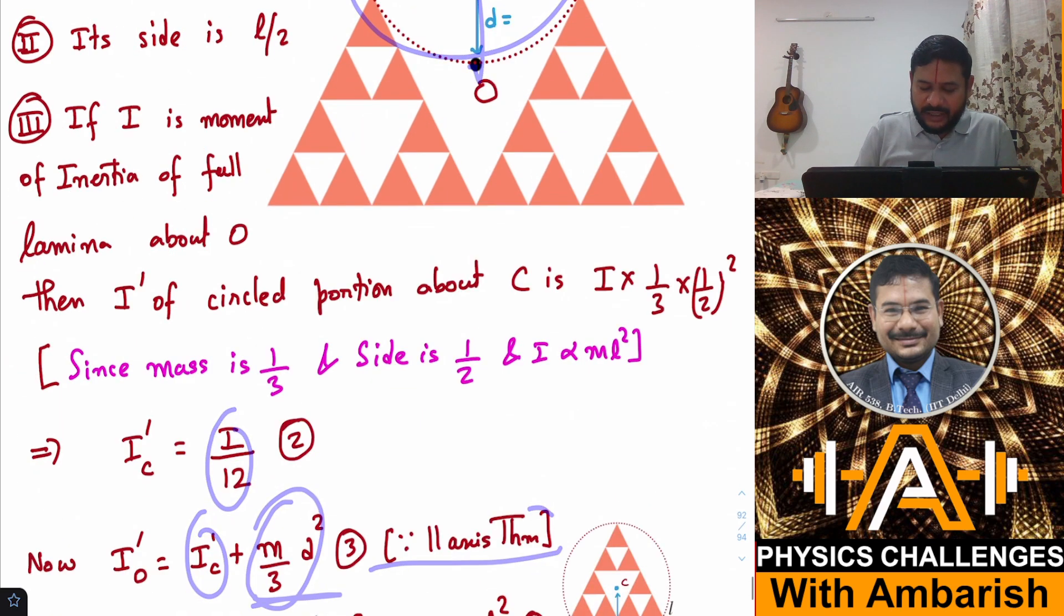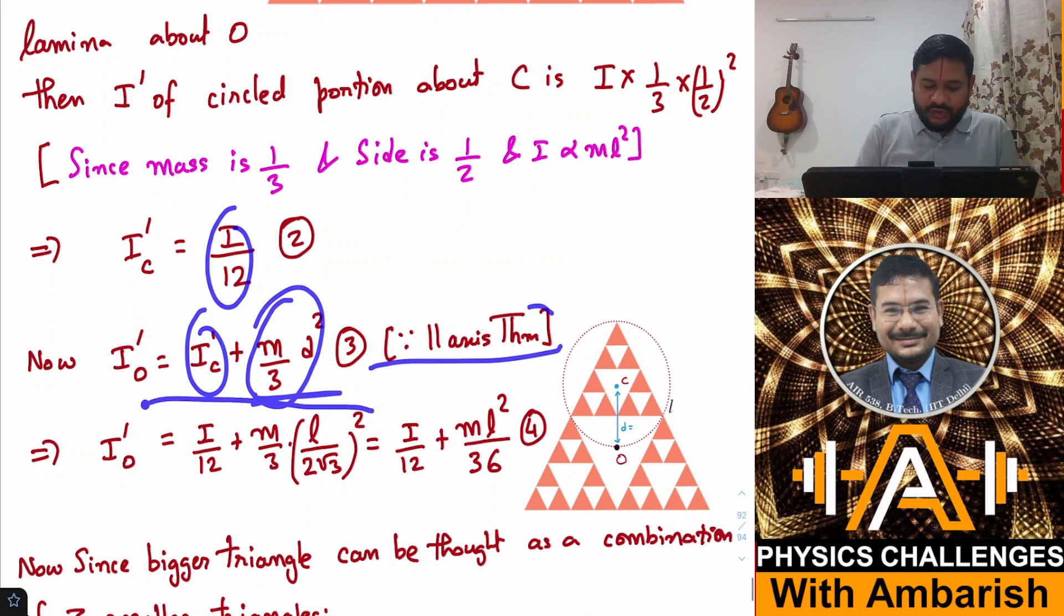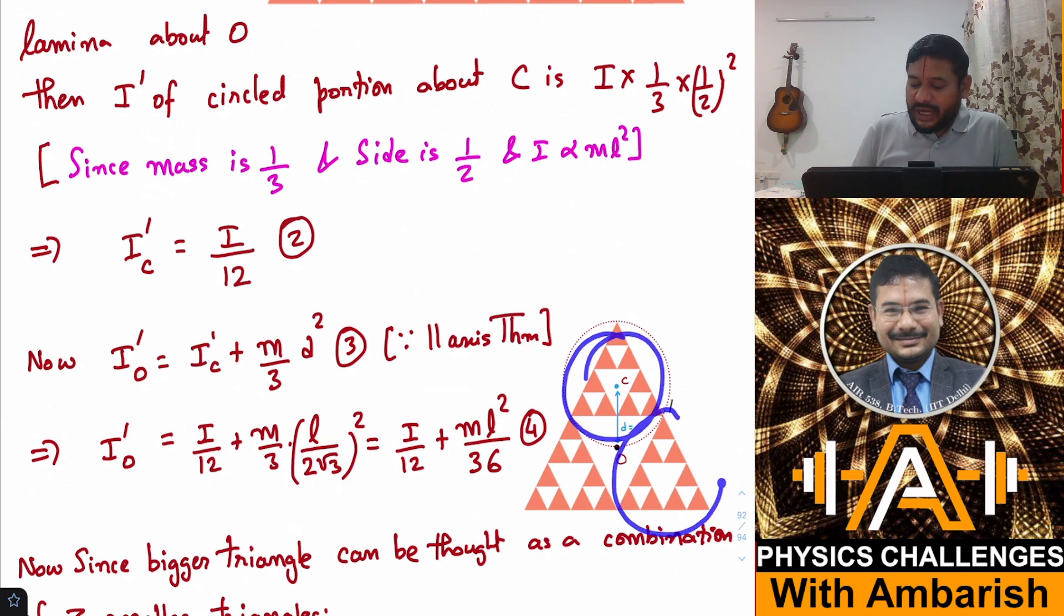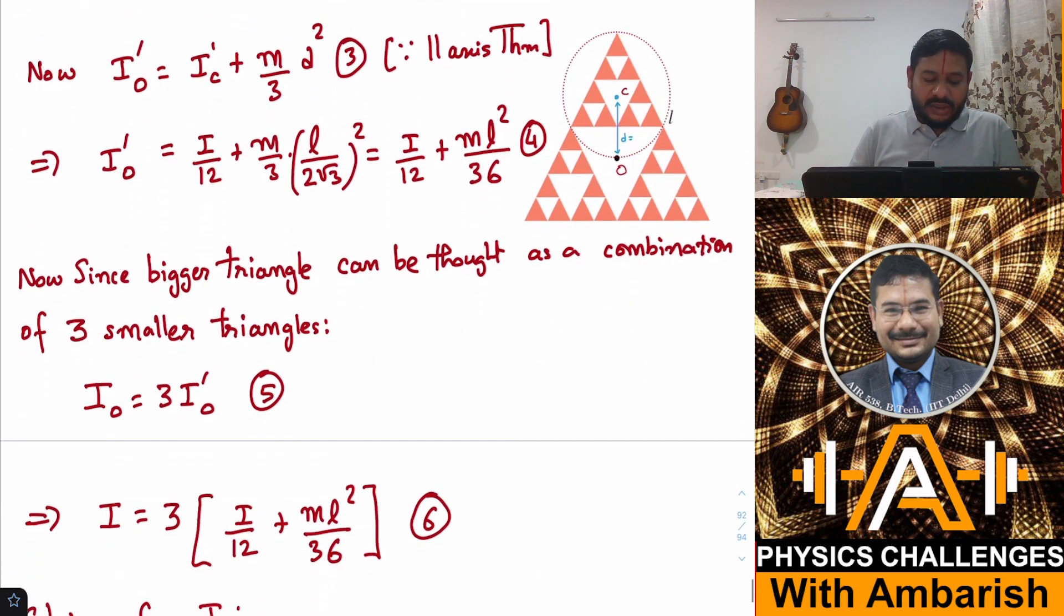If you simplify this it becomes I/12 + mL²/36. Now three of these when you add them together should become the original moment of inertia. That readily gives me an equation in moment of inertia. I can say that I about O should be equal to three times I' about O.